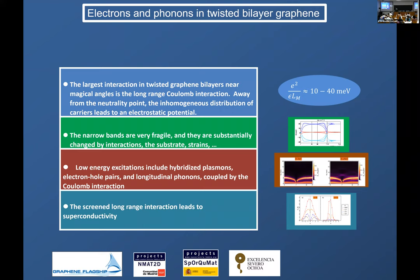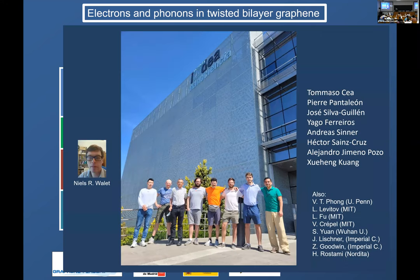First, the largest interaction is the Coulomb interaction. Then the narrow bands are very fragile. I didn't mention how strains or the substrate modify the narrow bands, but they also do a lot of damage to the bands. And then you can look at superconductivity in a diagrammatic fashion, mediated by electron-hole pairs, plasmons, and longitudinal phonons. And you can look at these low energy excitations, and they can mediate superconductivity. And this is it. This is mostly the group, and this is our institution. And notice that the façade of our lab, our institution, is a perfect giant moiré structure—a triangular moiré structure. Thank you very much.